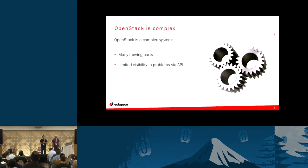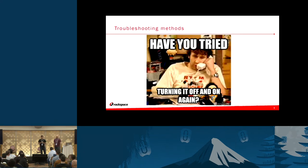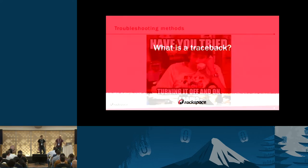OpenStack is a complex system with a lot of moving parts and limited visibility to problems via the API. The old adage of turning it off and turning it back on again doesn't really work here anymore, so you'll find yourself in the weeds troubleshooting on the infrastructure nodes when you have problems.